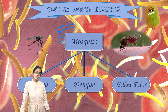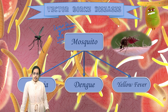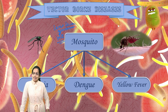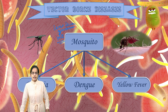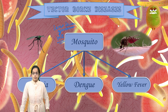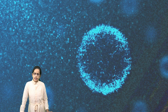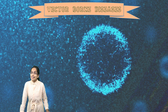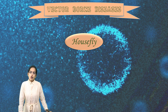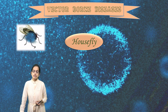Mosquitoes cause three major diseases — malaria, dengue, and yellow fever. Malaria is caused by Plasmodium; dengue is caused by Aedes — very important and commonly asked.